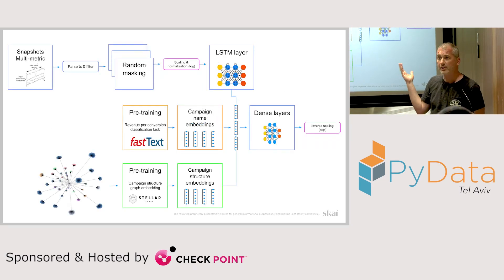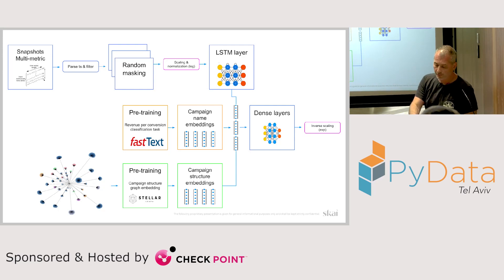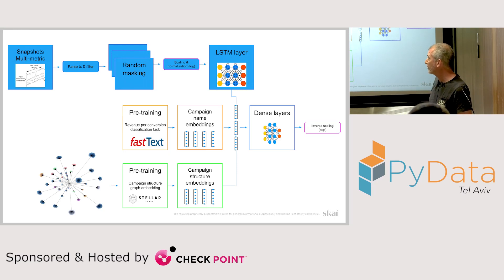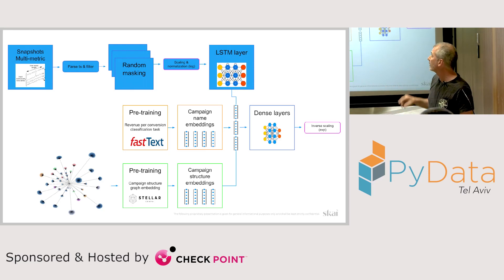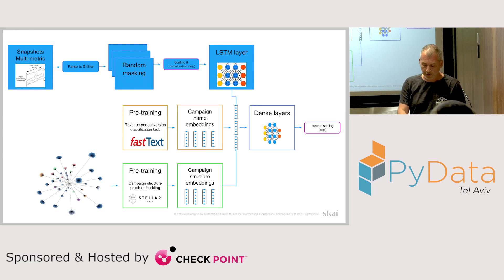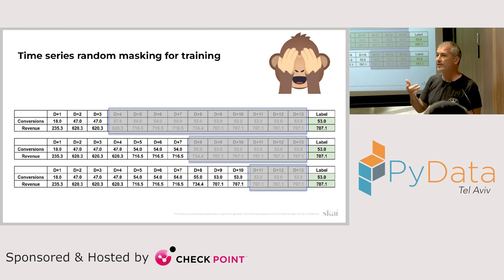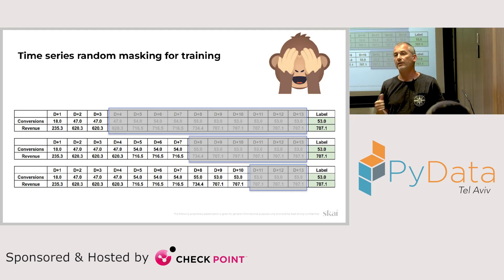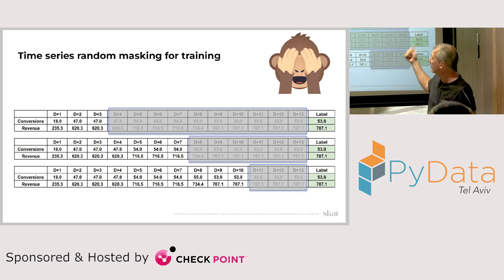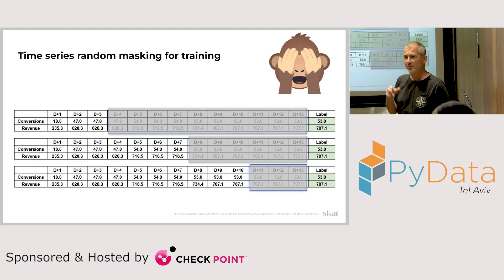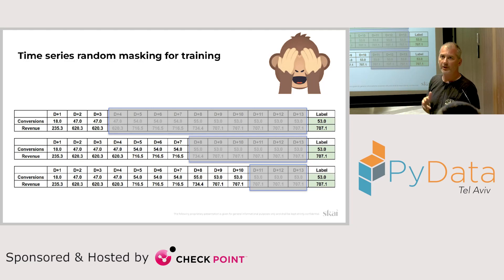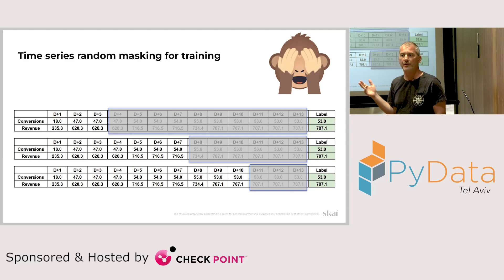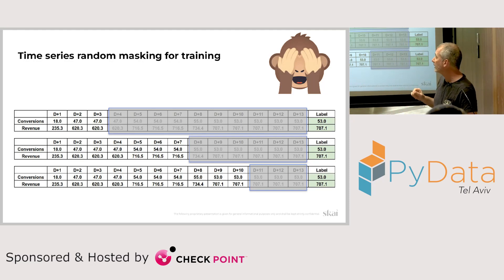This is a schematic view of the model architecture. Starting with the time series component — it's eventually fed into a recurrent neural network stack, an LSTM in our case. Before fitting into the recurrent stack, we need to simulate the production serving situation during training. We do that by taking the full time series and masking it. We take each observation in the training set, choose three random masks and apply them — that way we get the training data for the model.